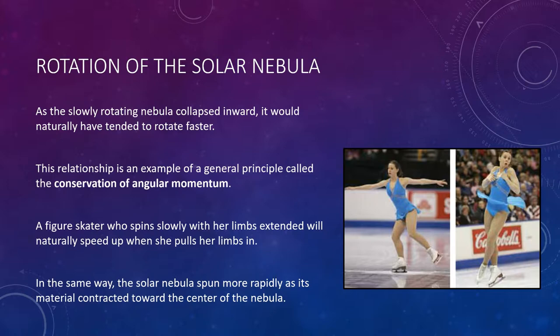As the slowly rotating nebula collapsed inward, it would naturally have tended to rotate faster. This relationship between the size of an object and its rotation speed is an example of a principle in physics known as conservation of angular momentum.